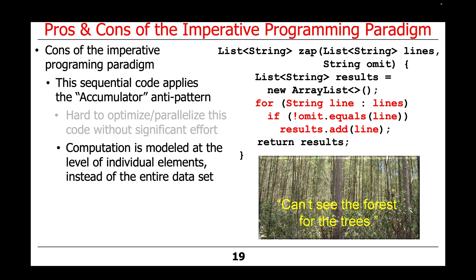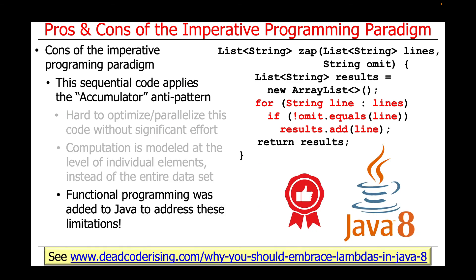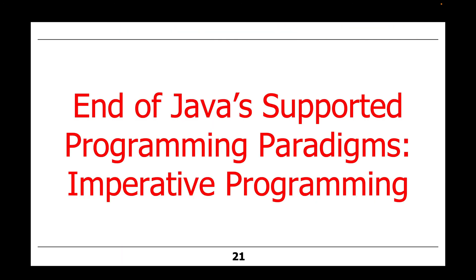Another problem with programming in this way is that the computation is modeled at a low level of individual elements — we're looking at each line one at a time instead of treating this as an entire dataset to be processed in mass, especially concurrently. No surprise, functional programming was added to Java to address just these kinds of limitations. These problems are nicely addressed in modern Java, which is Java 8 and beyond. That's the end of our brief overview of how Java's object-oriented programming abstractions support imperative programming.